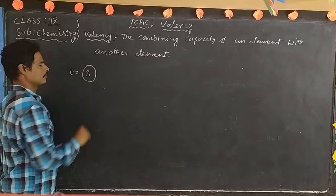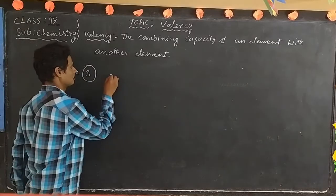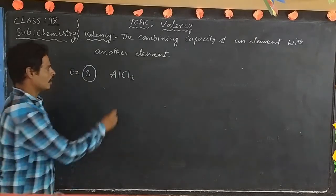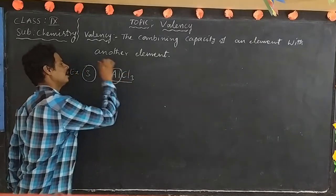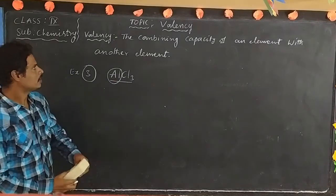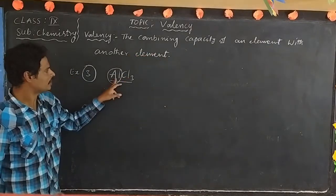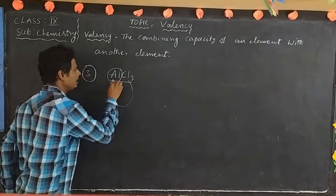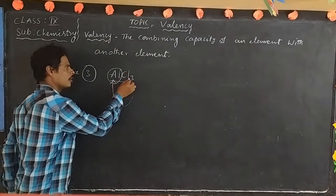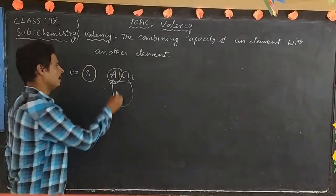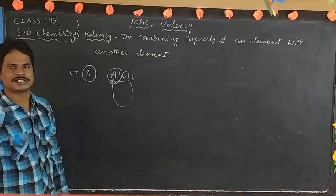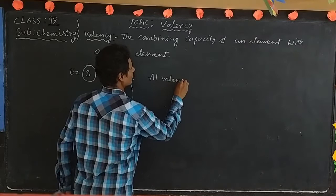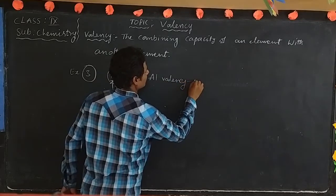Example three: aluminium chloride. What is the valency of aluminium? The combining capacity of an element with another element — how many chlorine atoms are attached to aluminium? There are three chlorine atoms attached to one aluminium. That is why aluminium valency is three.